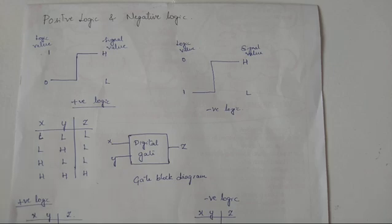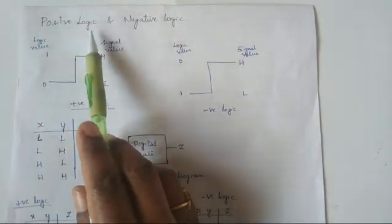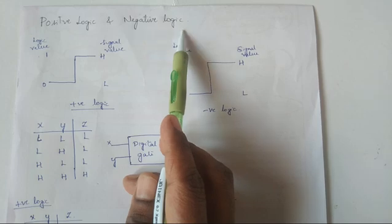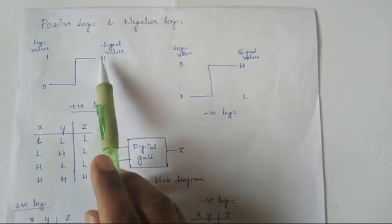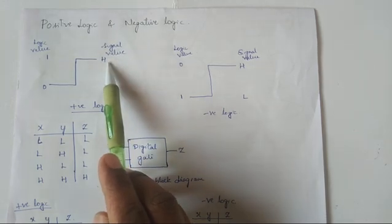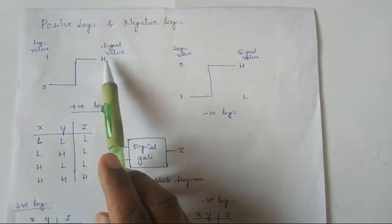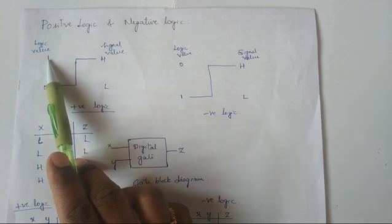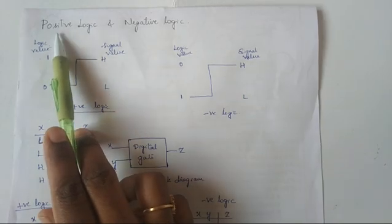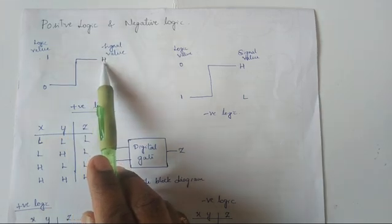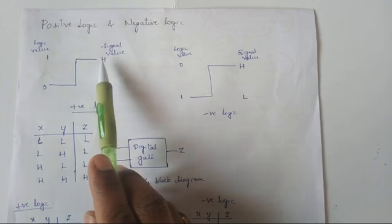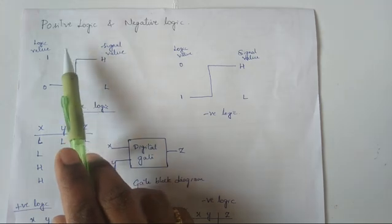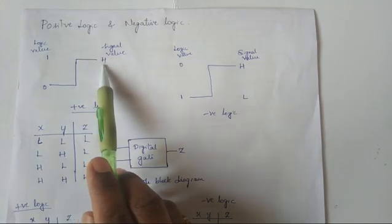These two logical values are represented in either positive logic or negative logic. What do we mean by positive logic? Positive logic means choosing a signal value of High (H) to represent the logical value 1. Choosing a High signal value H to represent logic 1 is called positive logic.